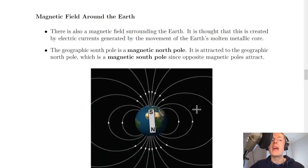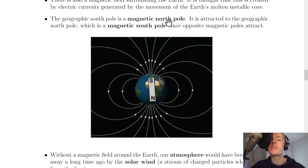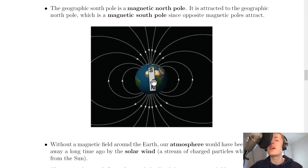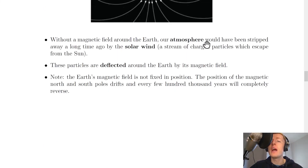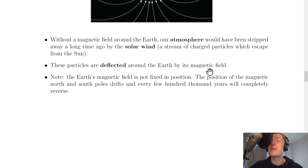Lastly we have the magnetic field around the earth. There is a magnetic field surrounding the earth, thought to be created by electric currents generated by the movement of the earth's molten metallic core. The geographic south pole is a magnetic north pole, attracted to the geographic north pole which is a magnetic south pole, since opposite magnetic poles attract. We can visualize the earth as a big isolated bar magnet with field lines curving around it. Without this magnetic field, our atmosphere would have been stripped away by the solar wind — a stream of charged particles from the sun — which are deflected around the earth by its magnetic field. The earth's magnetic field is therefore necessary for life to exist.